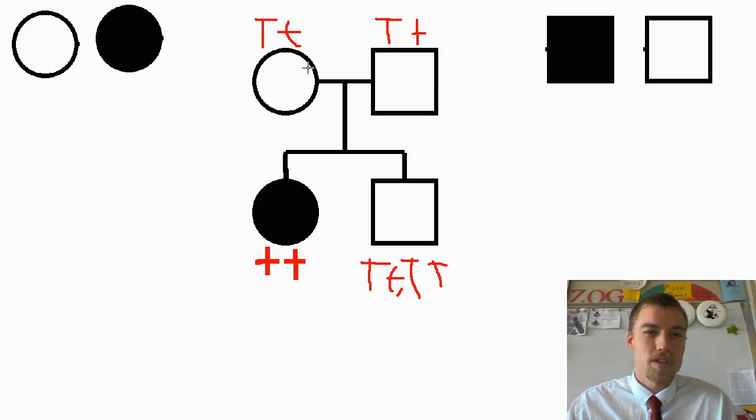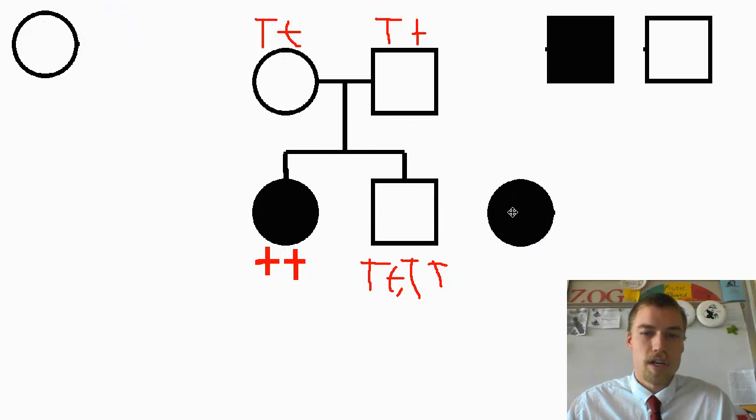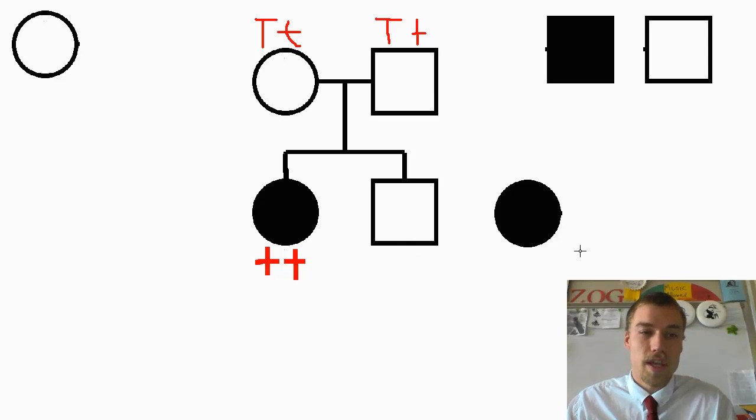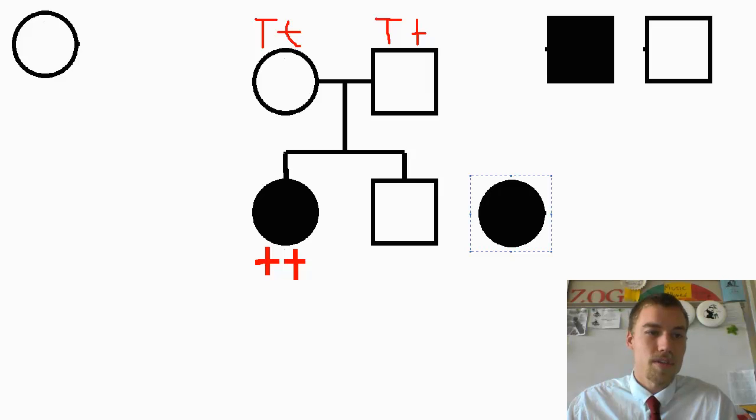So what we're going to do is we're going to do a test cross. In a test cross, we're going to cross someone that we don't know with a homozygous recessive individual. And what that's going to do is it's going to give us the opportunity to find out exactly what genotype he has.